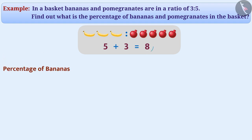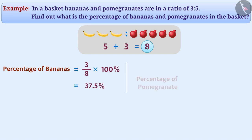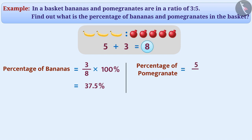The percentage of bananas in eight fruits is 3 by 8 multiplied by 100% is equal to 37.5%. And percentage of pomegranates in eight fruits is 5 by 8 multiplied by 100% is equal to 62.5%.